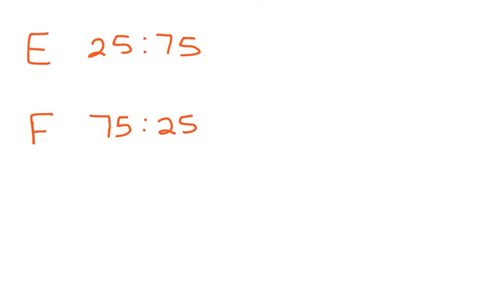Probability and odds are both most commonly reduced. Probability is often expressed as a percentage, so you can just divide it out. Odds are still written as a ratio. Looking at E and F, we can divide each of those — 25 and 75 — by 25, giving us 1 to 3 in E and 3 to 1 in F.